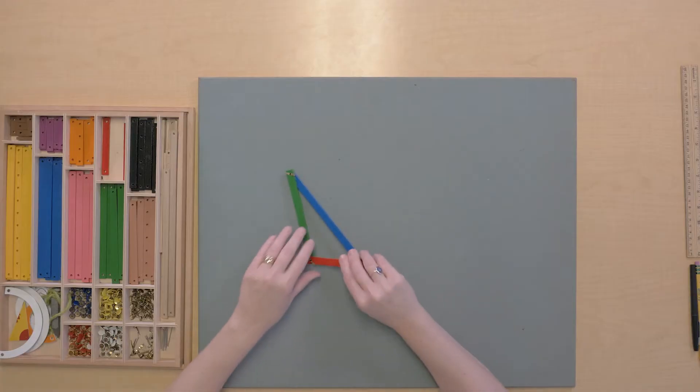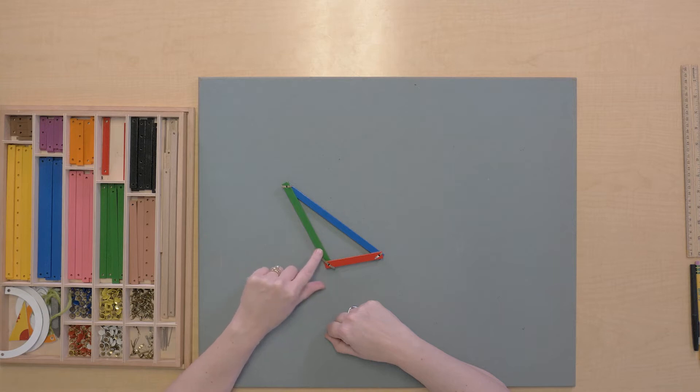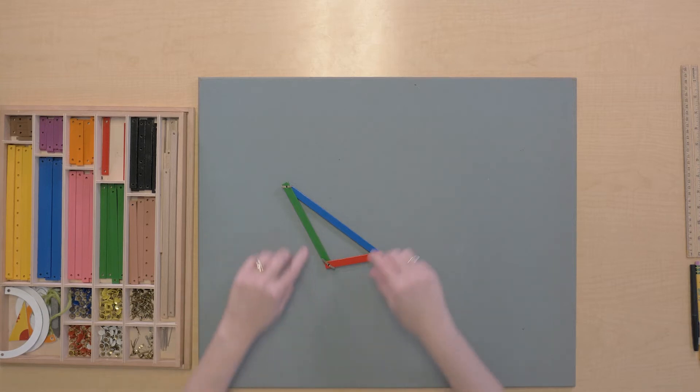For example, let's take a look at this triangle. I see that it's three different colors, so it's a scalene triangle, but I also see that it has an obtuse angle in it. So we can call this an obtuse angled scalene triangle.